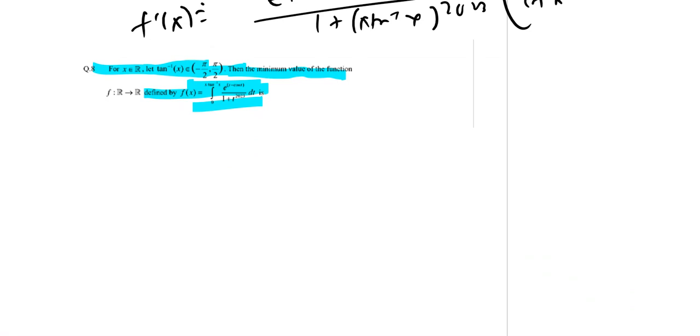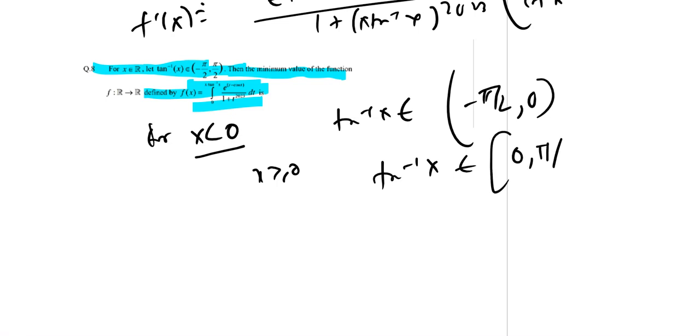For x less than 0, tan inverse x lies between minus pi by 2 and 0. For x greater than equal to 0, tan inverse x lies between 0 and pi by 2.